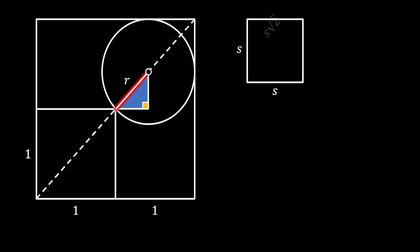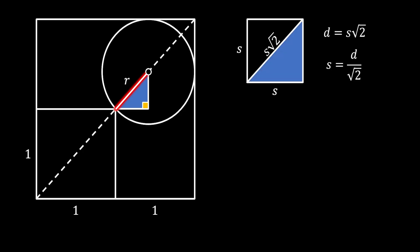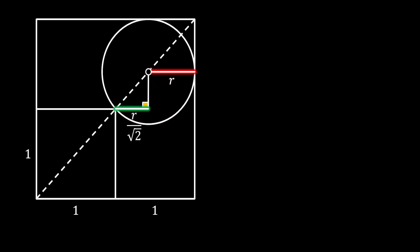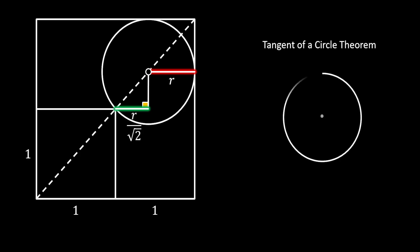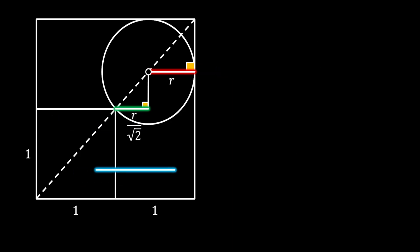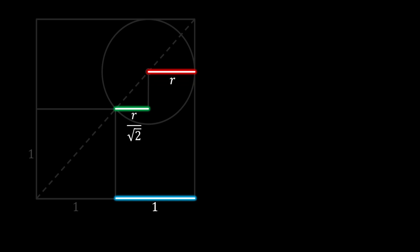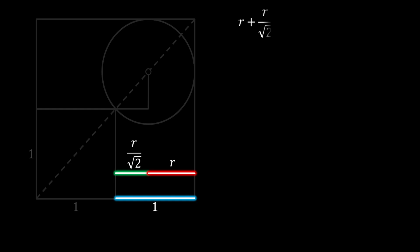Using the property of a square, since half of a square is an isosceles right triangle, the side of the triangle equals the diagonal divided by square root of 2. In our case, the small horizontal line equals r divided by square root of 2. Rotating the radius horizontally and applying the tangent of a circle theorem again, this radius is perpendicular to the side of the square. Looking at the bottom segment of length 1, we can see that the green and red lines together equal the blue segment at the bottom, so we can write this as an equation.